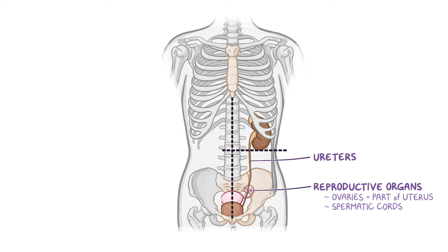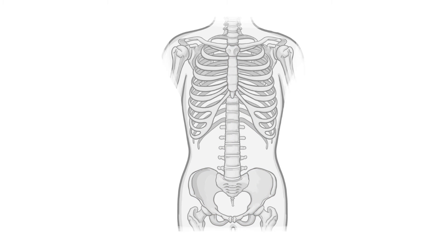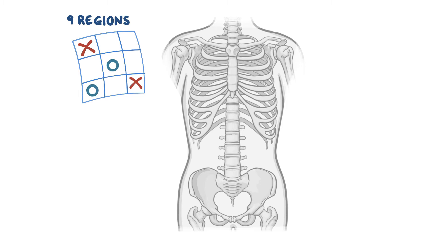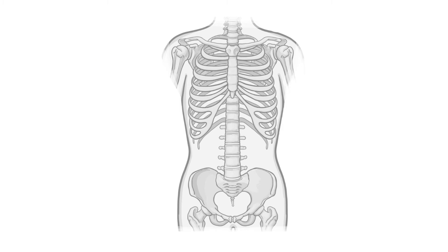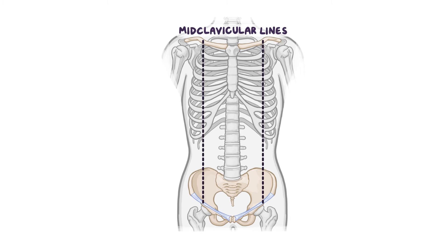In comparison to the four-quadrant system, the anatomy of the abdominal cavity can also be described using the regional system, which divides the abdomen into nine distinct regions. If you've ever played tic-tac-toe, you already know how to do that. You need two vertical or sagittal planes intersecting with two transverse or horizontal planes. Imagine vertical or sagittal lines descending from the middle of the left and right clavicle — these are known as the midclavicular lines.